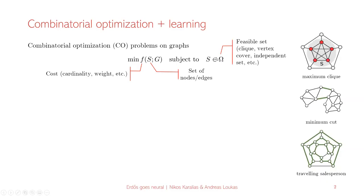At the same time, you have some constraints that you want to satisfy. A lot of different classical problems of computer science fall in this category. For instance, if you care about cliques, the maximum clique problem is a classical instance — you care about finding a set that has large cardinality and at the same time forms a clique. Other things like maximum or minimum cut, vertex cover, independent set, traveling salesperson, they all can be written in this form.